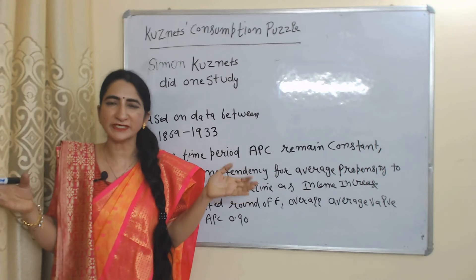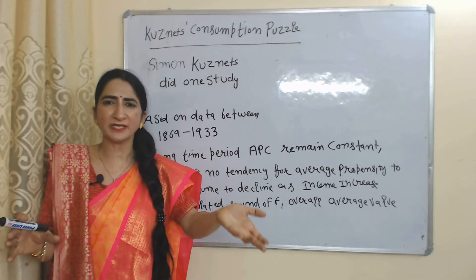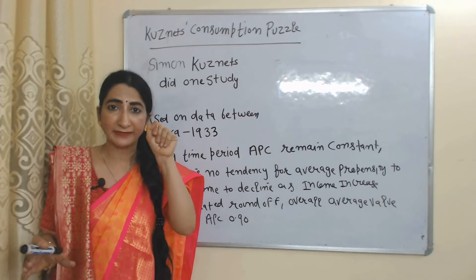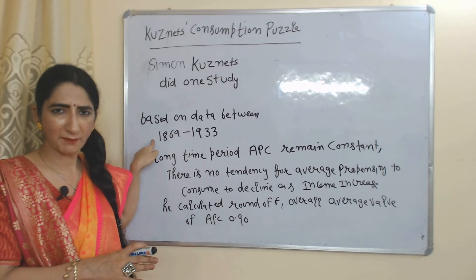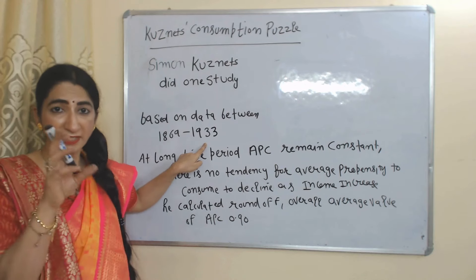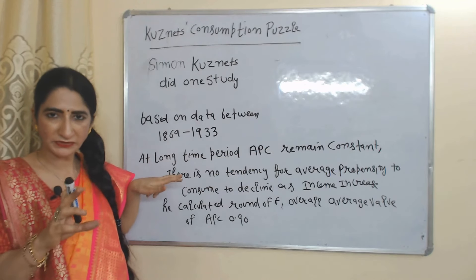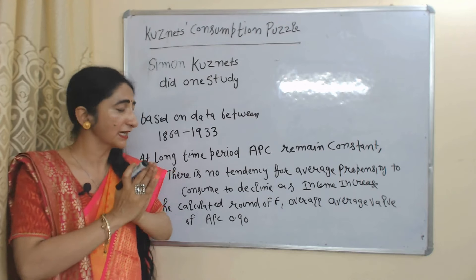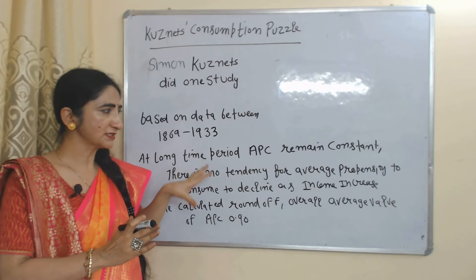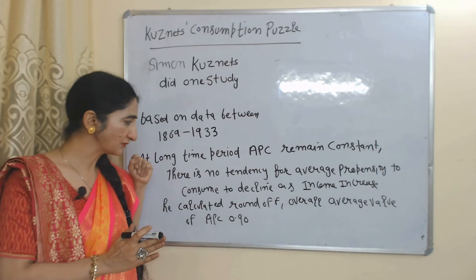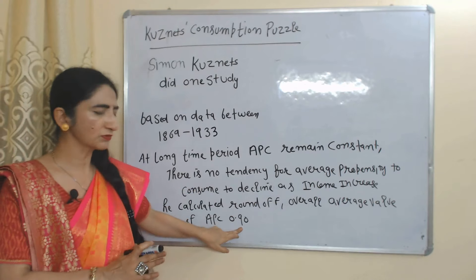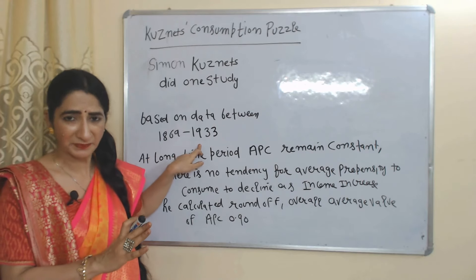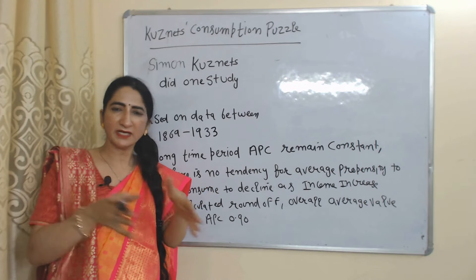Now we are going to talk about Kuznets' consumption puzzle. Keynes' consumption function was based on his observation — there was no empirical evidence. But Simon Kuznets did a study based on data between 1869 and 1933 and came to the conclusion that in the long run, APC remains constant and there is no tendency for APC to fall as income increases. He calculated an overall average APC value of 0.9, which remained constant between 1869 and 1933.